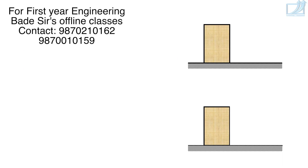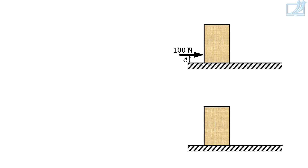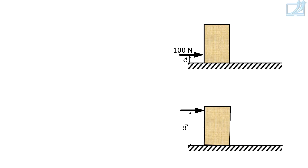There is a box resting on a horizontal surface. A 100N force is applied on the box at distance D from the base. Under this force, there is a possibility that the block slides. Now, the same 100N force is applied on the box very close to its top end, at distance D' from the base. If there is enough friction to prevent sliding, then there is a possibility of rotation of the box about the corner. So if the force is applied very close to the base, there is a possibility of translation; if applied very close to the top end, there is a possibility of rotation.